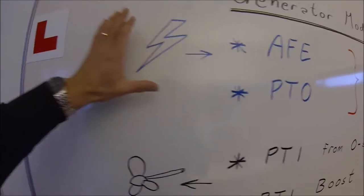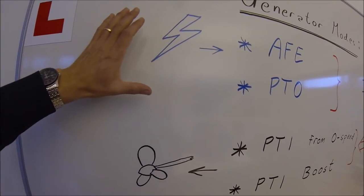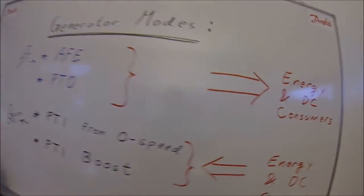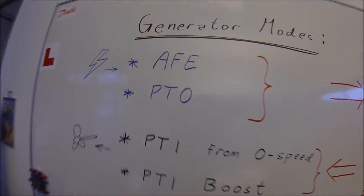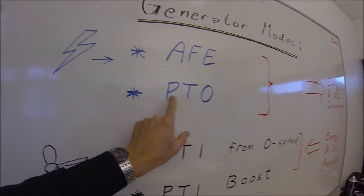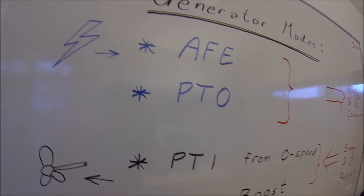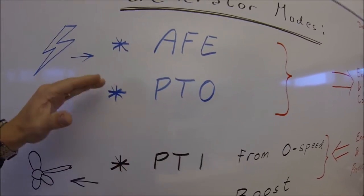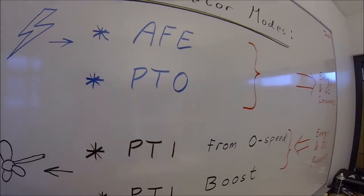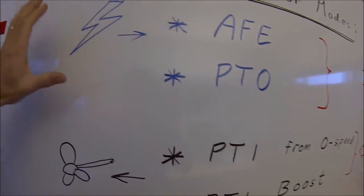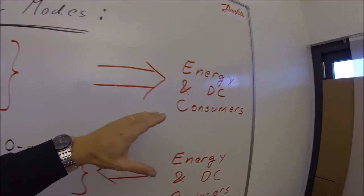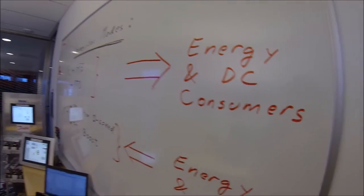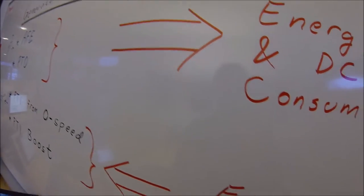To take power out of the generator and put it to its consumers, the most common way to do that is in the power take out mode. You can also utilize the active front end mode, but the power take out mode — where the drive produces a set DC voltage for its DC bus — is the most common way to do it.